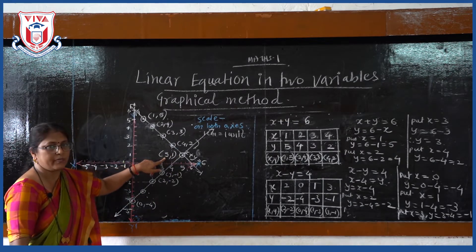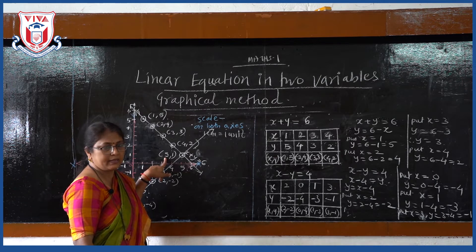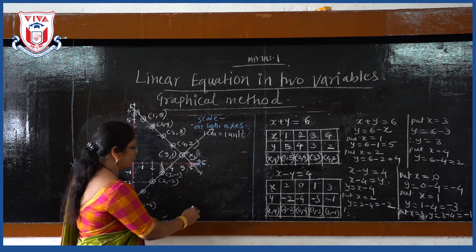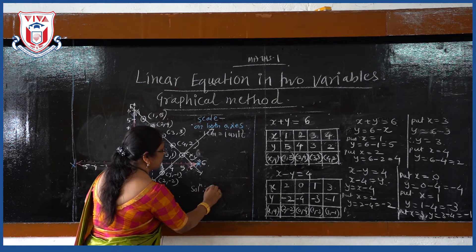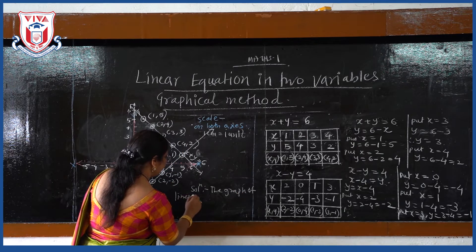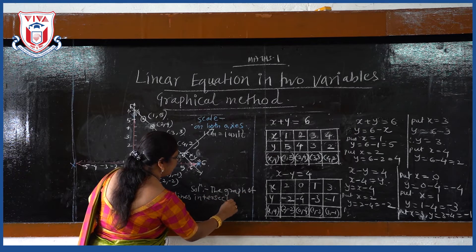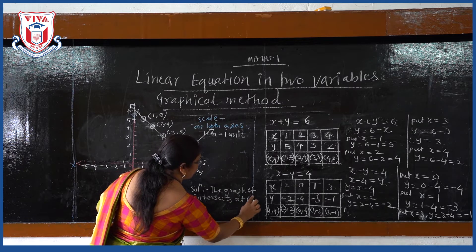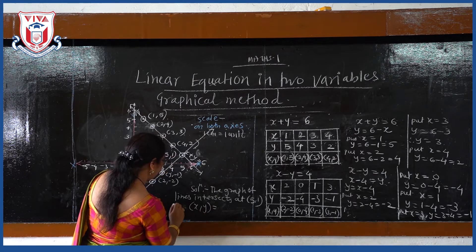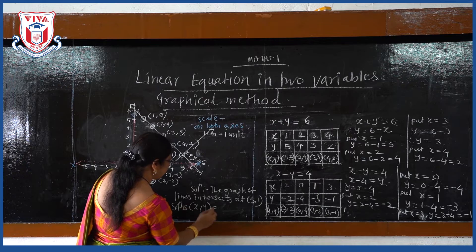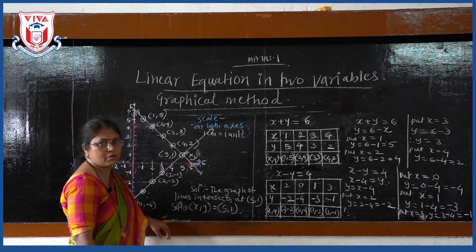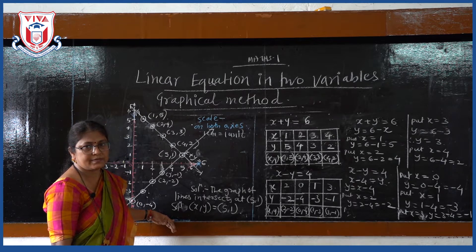The coordinates of the point of intersection are (5, 1). Therefore, the solution of the given equations is x equals 5 and y equals 1. The graph of the two lines intersects at (5, 1), which is the solution of the given simultaneous equations.